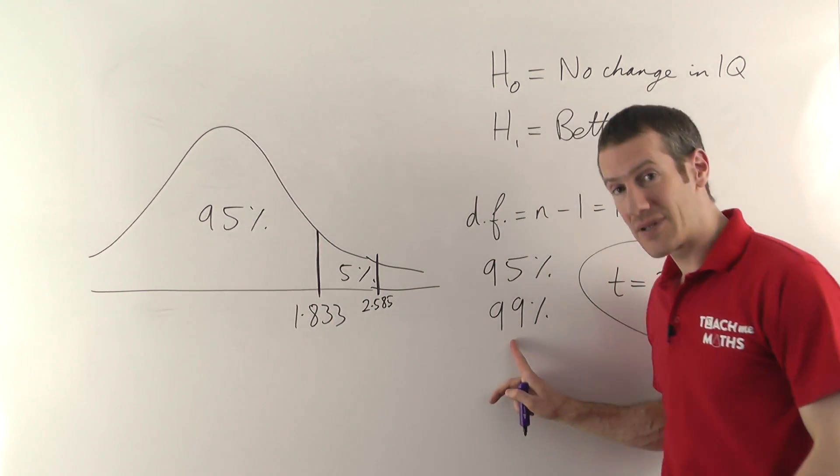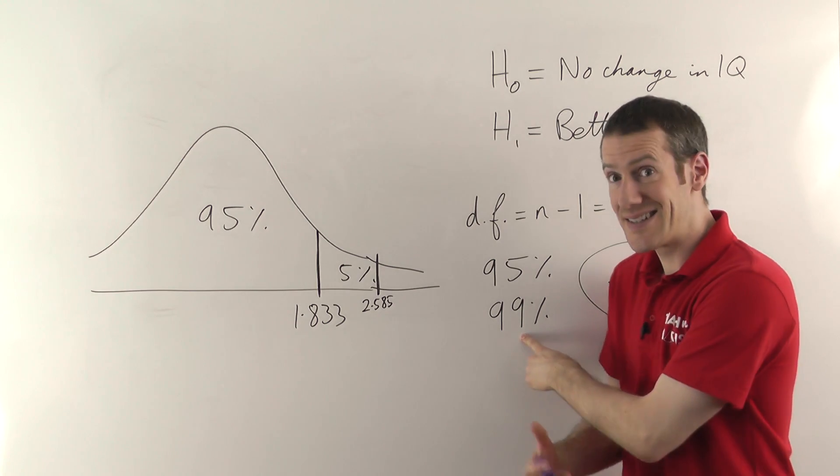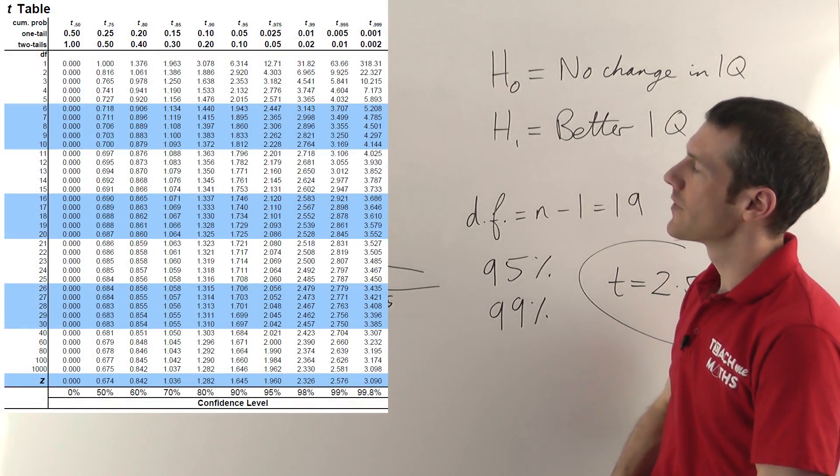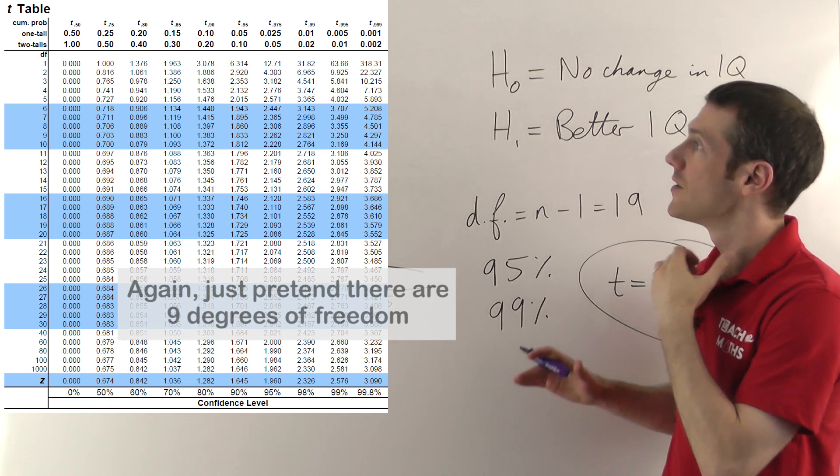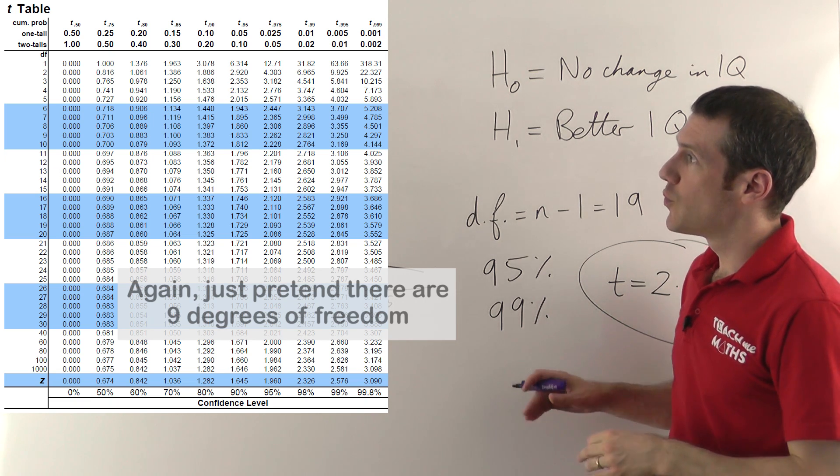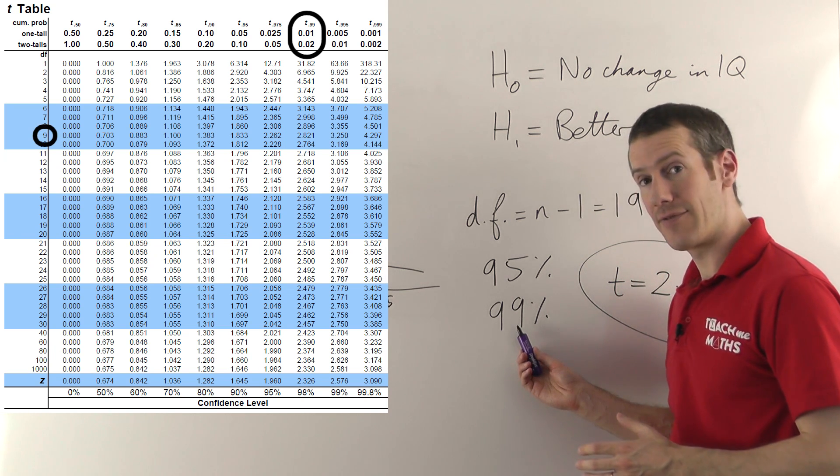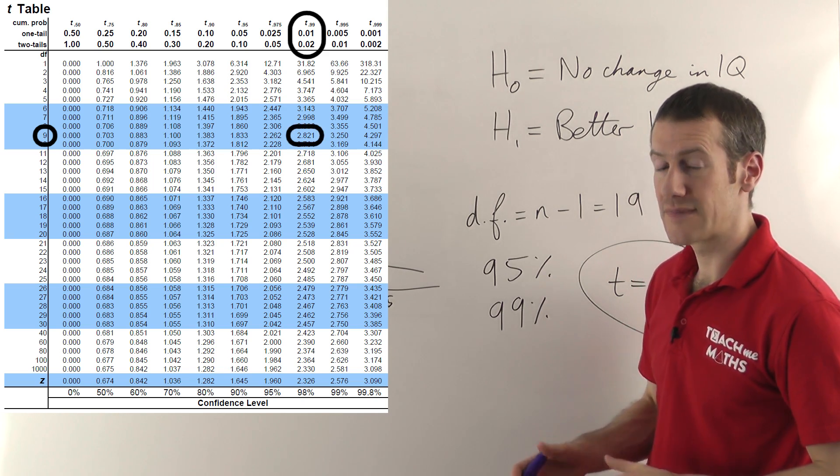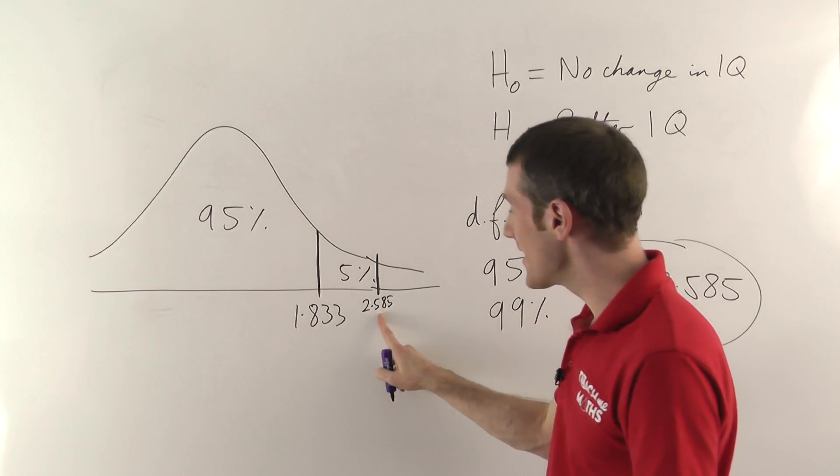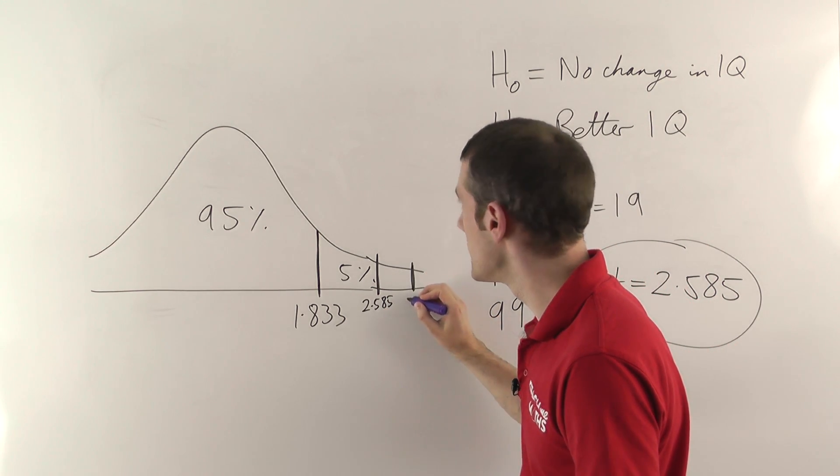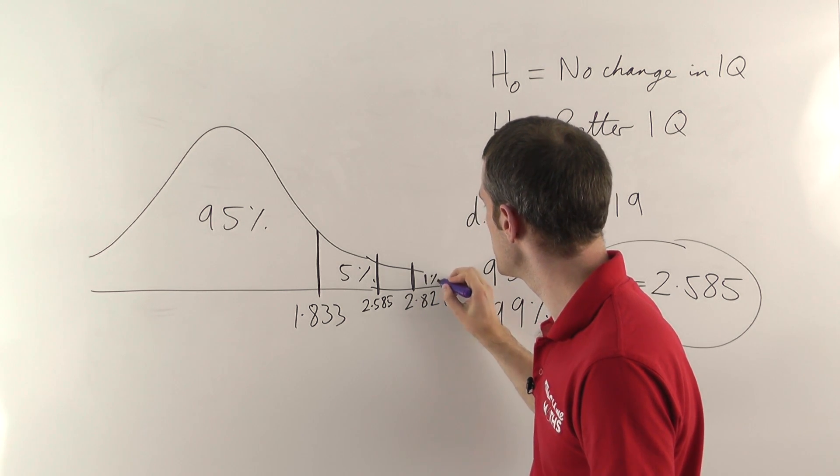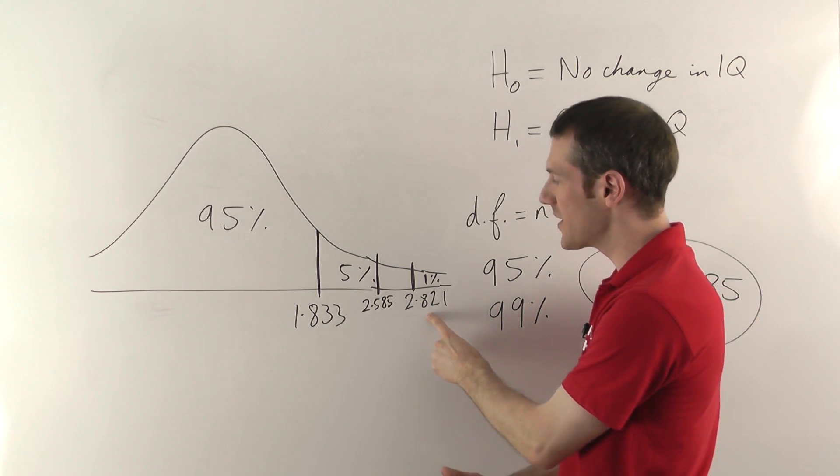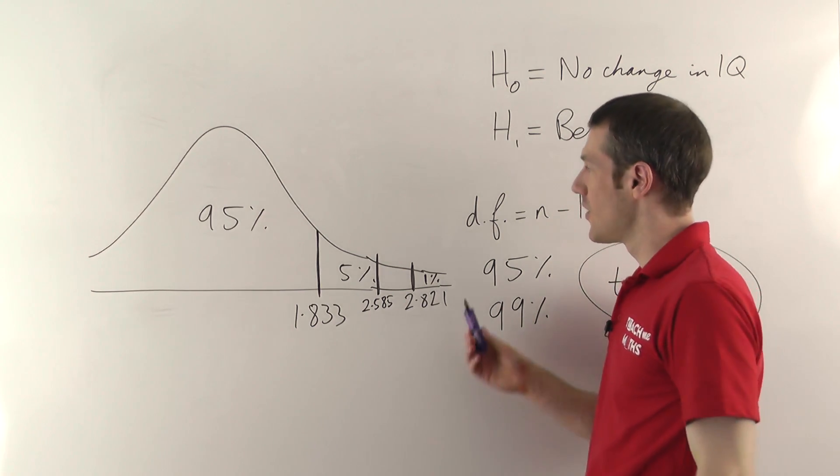Now, if we just go back to our 99% for a moment, maybe we could be really confident and say there's a 99% confidence of this drug giving people a better IQ. If we put the table back up, same again, 19 degrees of freedom down the left hand side, one tail test, but along the top, we are going to find the 0.99 level. That's the 99% level here. So if we read down, this time, we're going to get 2.821. That's the critical value. That's going to be bigger than the 2.585. So the 1% level, the 2.821, we're not actually that big. Our T value is not big enough to say that we're 99% confident that there's a better IQ.